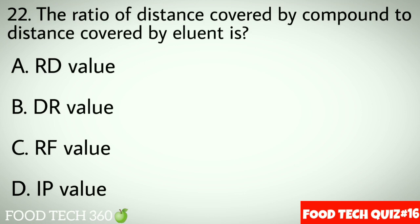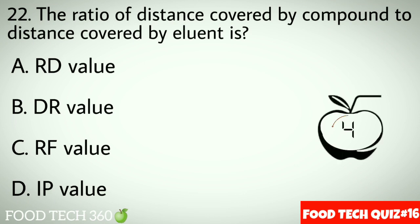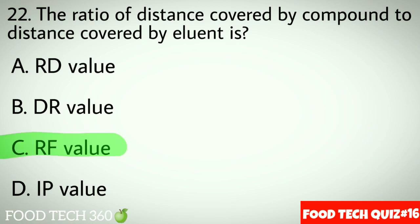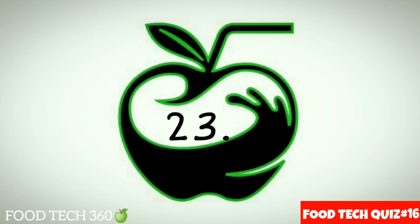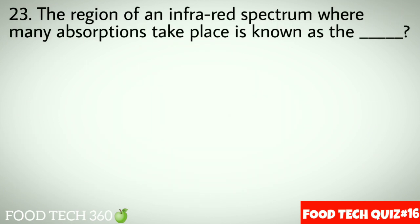Question No.22: The ratio of distance covered by compound to distance covered by solvent is dash. Options A: RD value. B: DR value. C: RF value. D: IP value. Correct answer C: RF value.